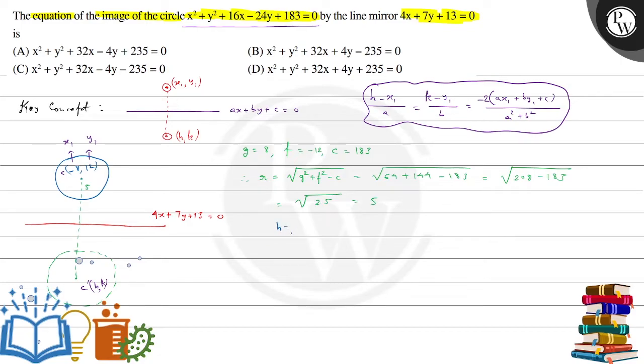So, h minus x1 matlab minus 8, divided by a, in this case a is 4, equals k minus y1 matlab 12, divided by b, that would be 7. This equals minus 2 times, ax1 matlab 4 times, x1 is minus 8, toh ho gaya minus 32, plus 7y matlab 7 times, 7y1 actually, 7 times 12, which is plus 84, plus 13, of course, divided by a squared plus b square matlab 4 squared plus 7 squared. So, thoda sa is value ko pahle simplify kar leete hai. So, 84 minus 32 will be 52, 52 plus 13 will be 65. So, this is minus 2 multiplied by 65, divided by 49 plus 16 is also 65. So, basically, ye value jo hai, wo minus 2 a gaya.